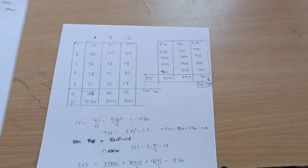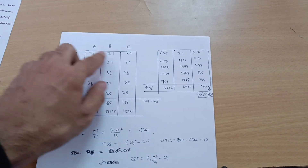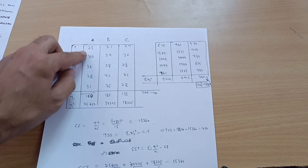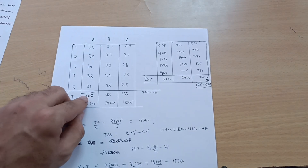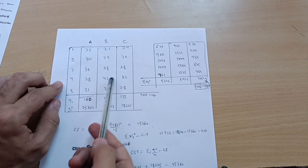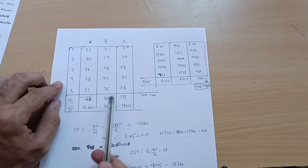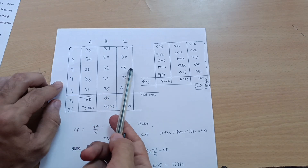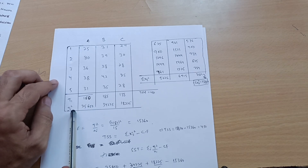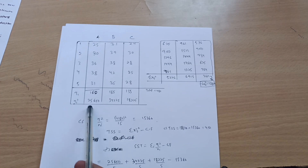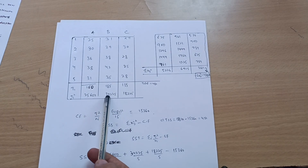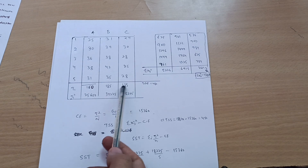The procedure is the same as before. Take the table as it is. Sum the columns: for machine A, 25+30+36+38+31 = 160; for machine B, 31+39+38+42+35 = 185; for machine C, 24+30+28+25+28 = 135. Also take the squares of these sums, which will be useful for the formulas: 160² = 25600, 185² = 34225, 135² = 18225.